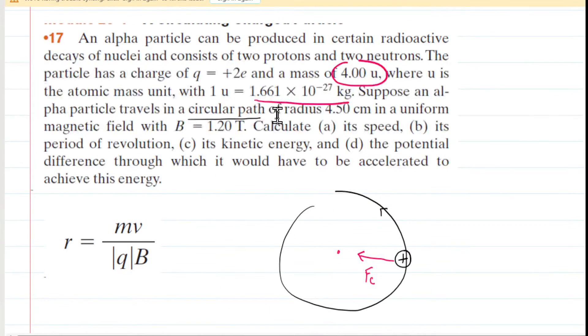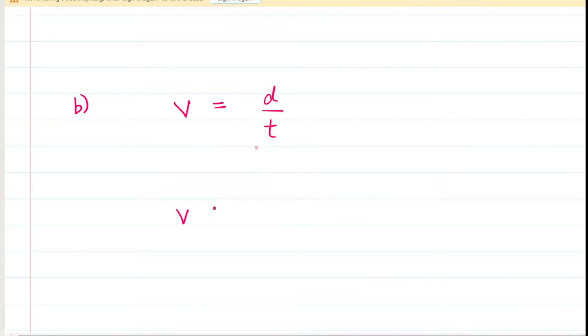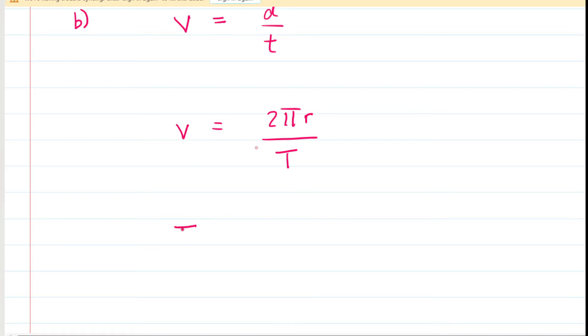In part B, we are asked to calculate its period of revolution. A period of revolution basically just means the time required to travel once around this circle. We know that speed, just in general, is equal to a distance divided by a time. Because this particle is moving on a circular path, the distance around the path would be the circumference of the circle. So that would be 2π times the radius. And then the time is going to be what we're looking for. They often use a capital T when denoting the period. So we can do a little algebraic manipulation here. You basically just swap the V and the T. And we can see that the period is going to be the circumference divided by the speed.